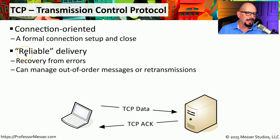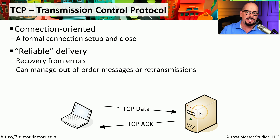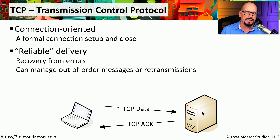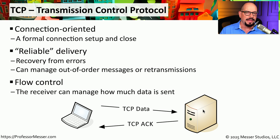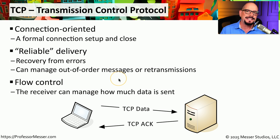TCP is sometimes referred to as reliable delivery — we can know that information sent to another device really has been received, because TCP includes an acknowledgement process. TCP sends the data, and the receiving device sends back an acknowledgement so both sides know everything was received properly. If data is damaged or corrupted in transport, the receiving station can request a retransmission. TCP also supports flow control, where the receiver can tell the sender to speed up or slow down based on how much data it can handle.